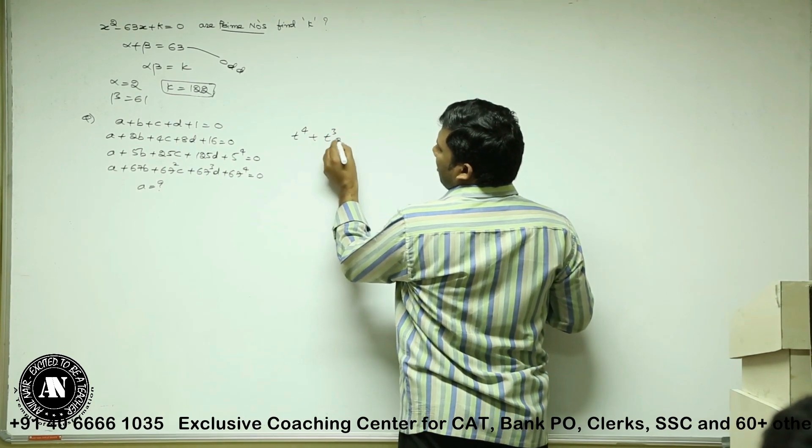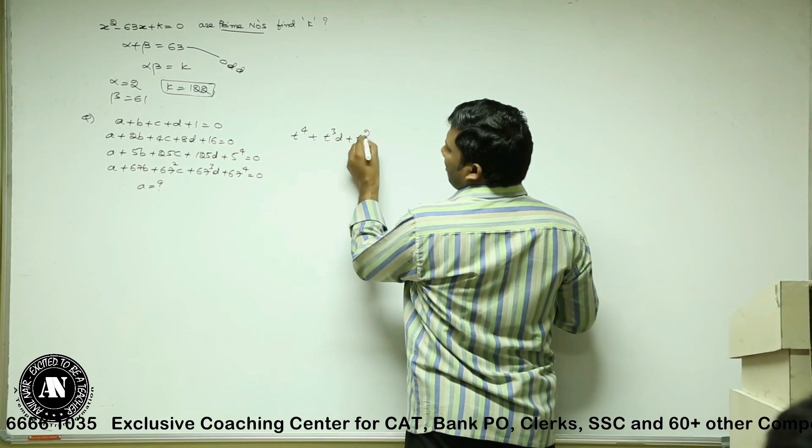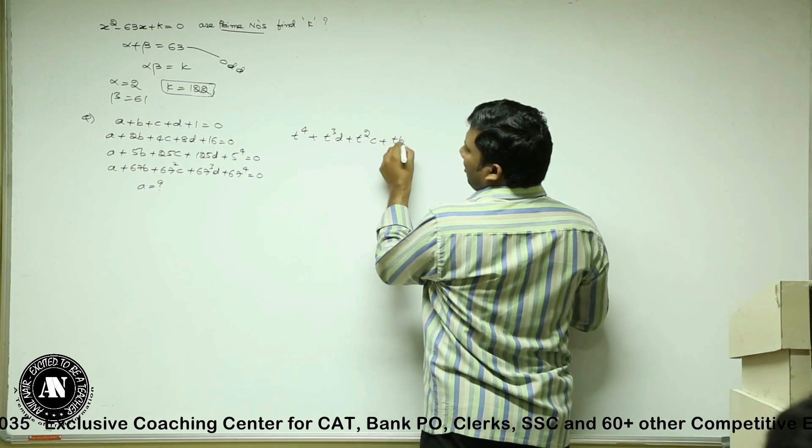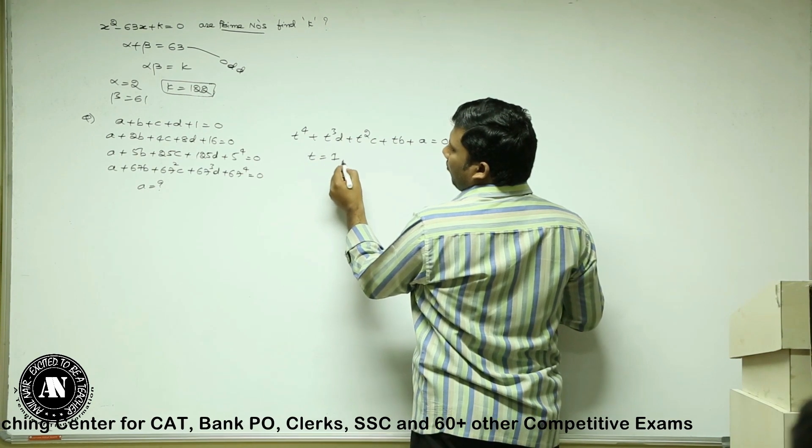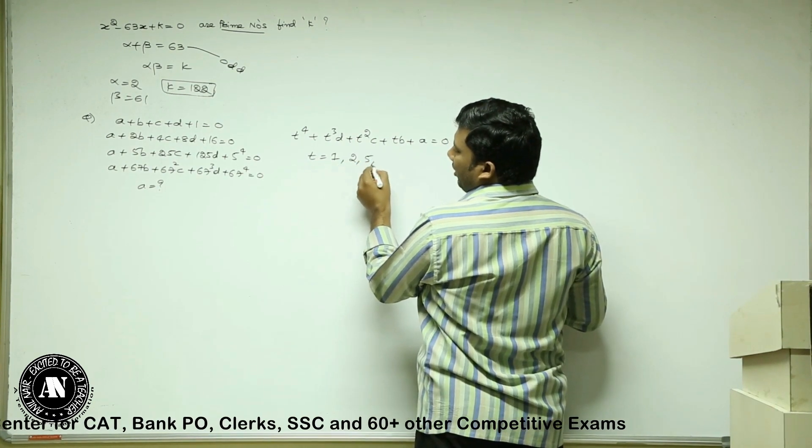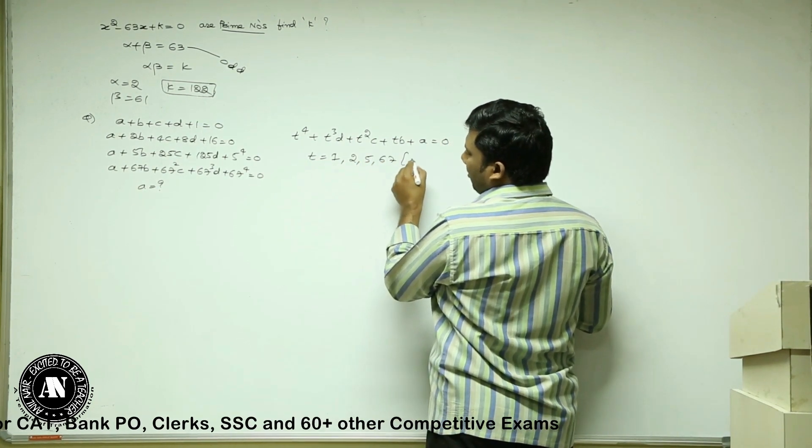T to the power 4 plus T cubed D plus T squared C plus TB plus A equals 0. T is nothing but 1, 2, 5, 67. So these are nothing but the roots.